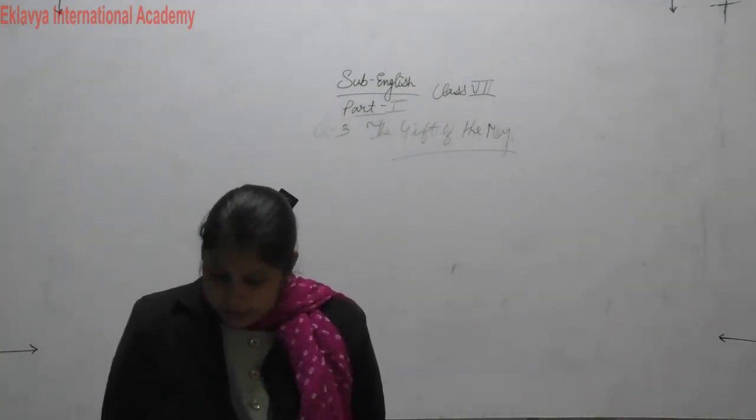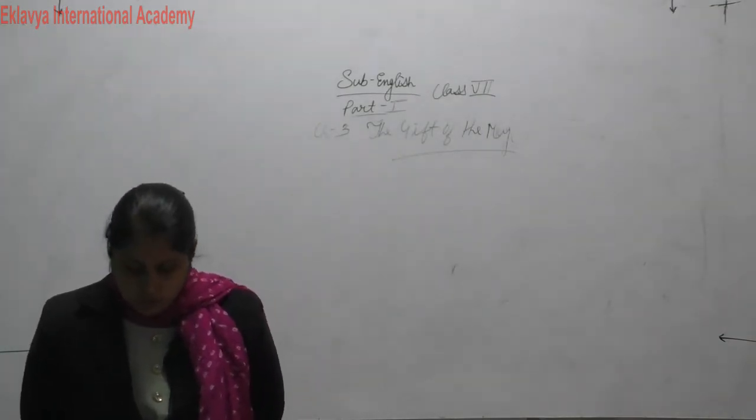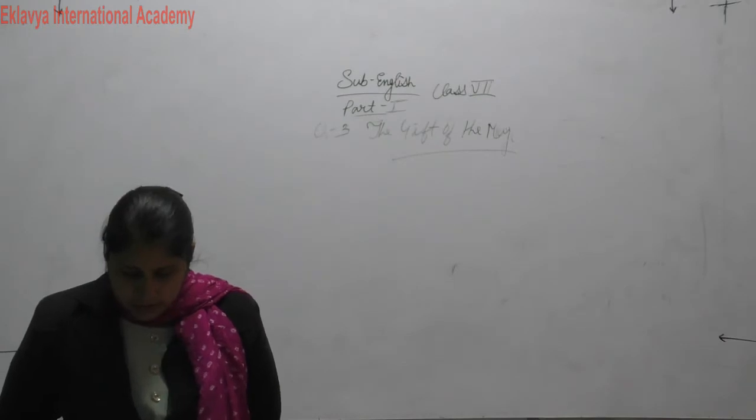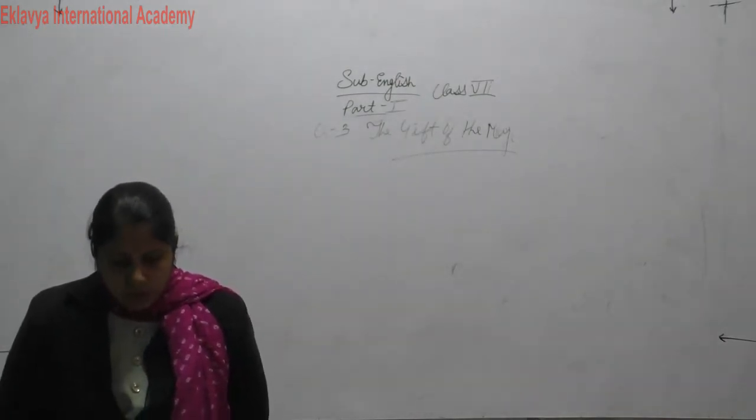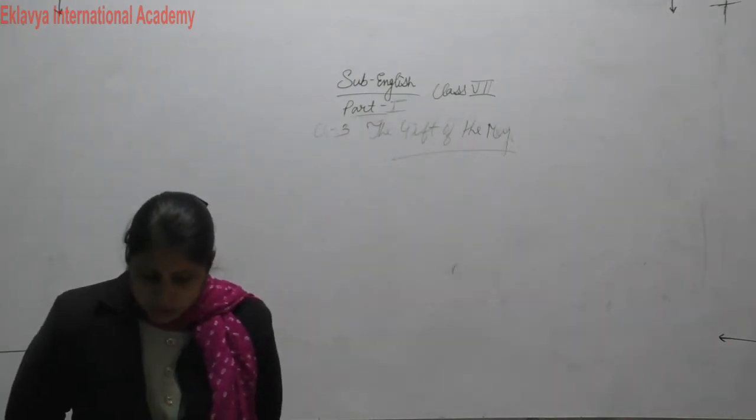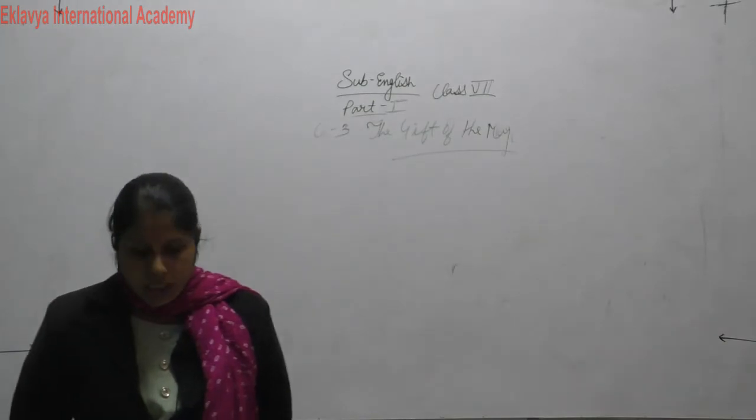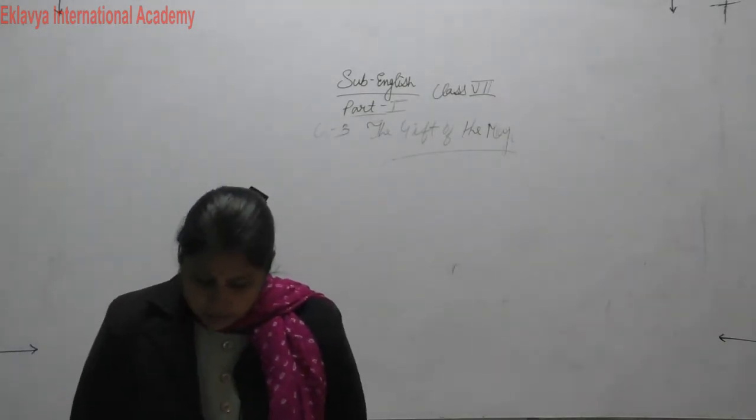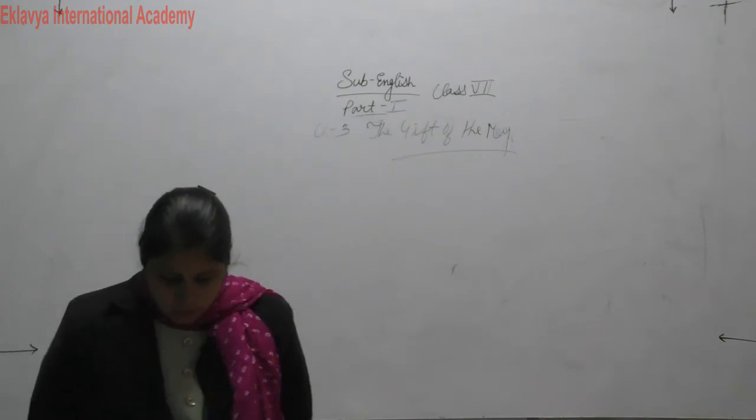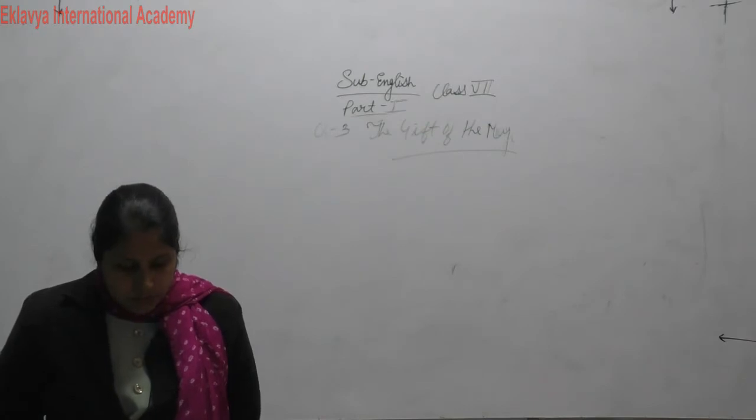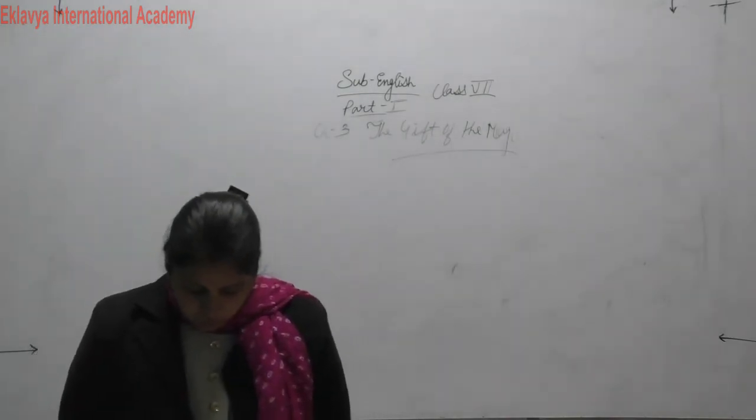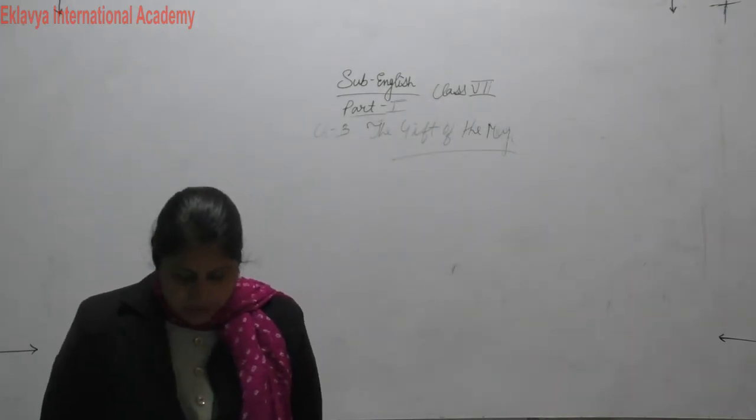Rapidly she pulled down her hair and let it fall to its full length. Now there were two possessions of the Jim Dillingham Youngs in which they both took a mighty pride. One was Jim's gold watch that had been his father's and his grandfather's, and the other was Della's hair. Had the Queen of Sheba lived in the flat across the air shaft, Della would have let her hair hang out the window some day to dry, just to depreciate Her Majesty's jewels and gifts.